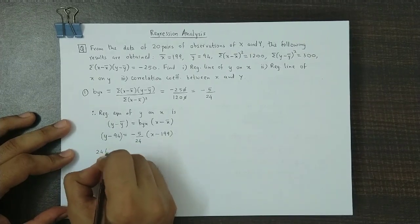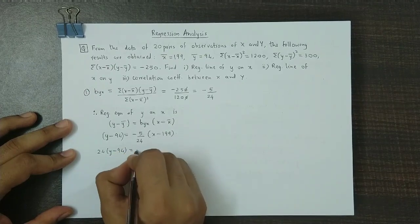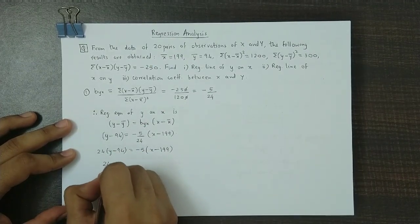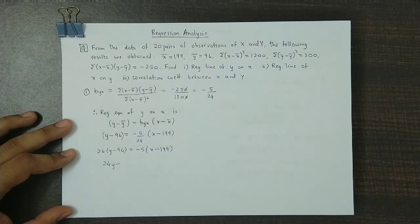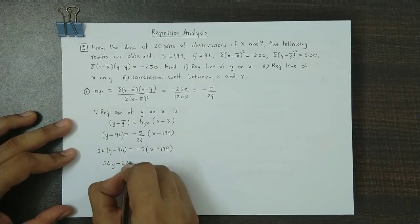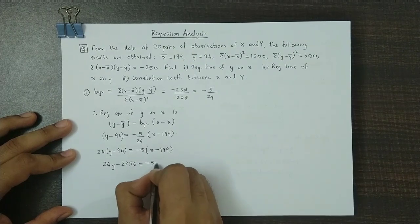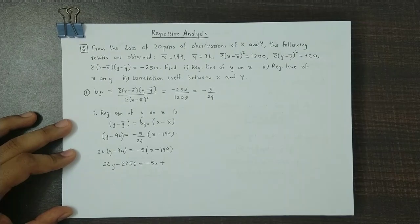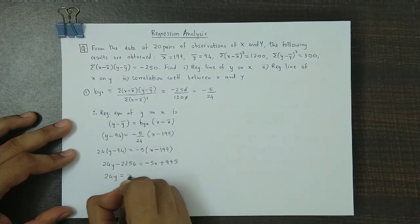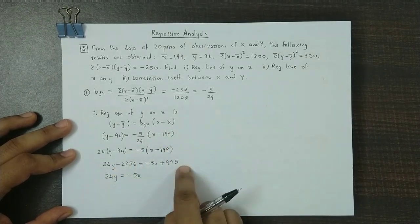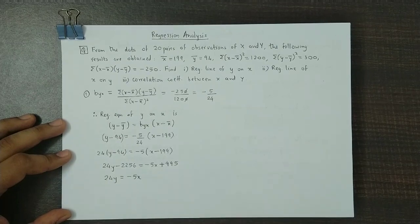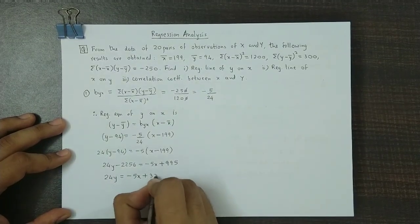Cross-multiplying: 24 times (y minus 94) equals minus 5 times (x minus 199). Expanding: 24y minus 2256 equals minus 5x plus 995. So 24y equals minus 5x plus 995 plus 2256, which gives 24y equals minus 5x plus 3251. This is the y on x regression equation.